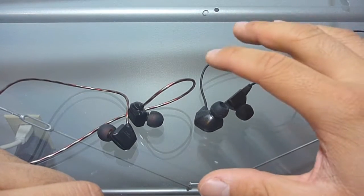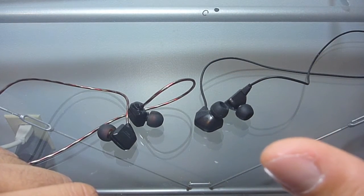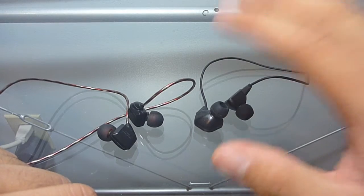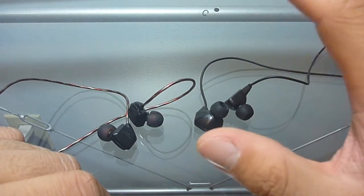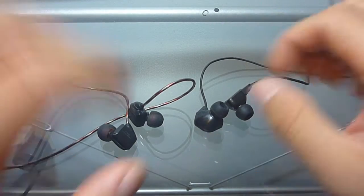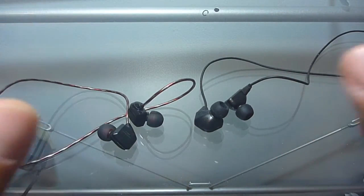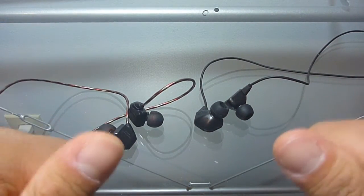While with the Havi B3 Pro 1s, I had to use it all the way up to about half way or 8 out of this total 16 in the volume. So these Havi earphones definitely drain your battery a lot faster than the vSonic GR07. So that is just something to note before buying these earphones.